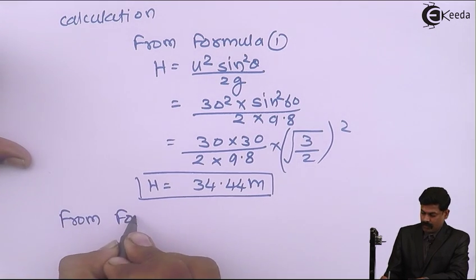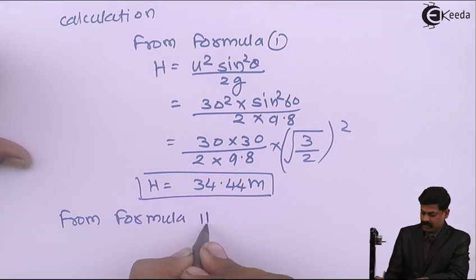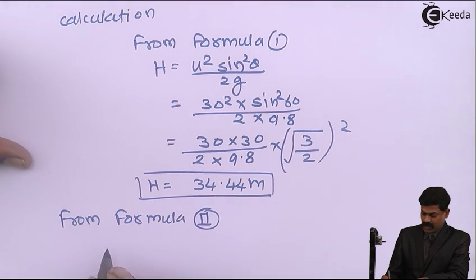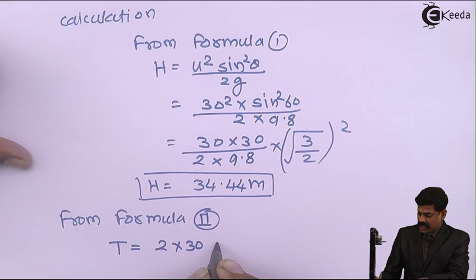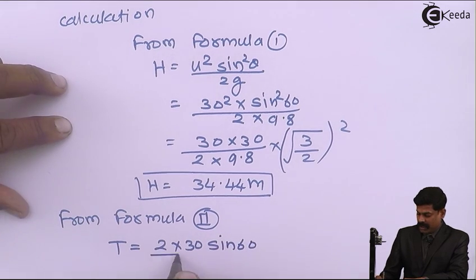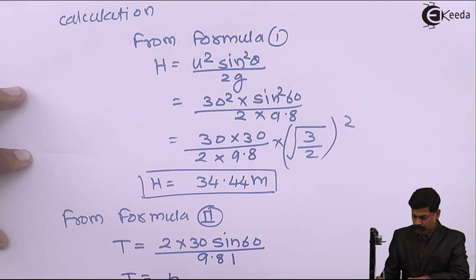From formula second: t equals 2 into 30, multiplied by sine of 60, divided by 9.81. Calculating this, t equals 5.3 seconds.